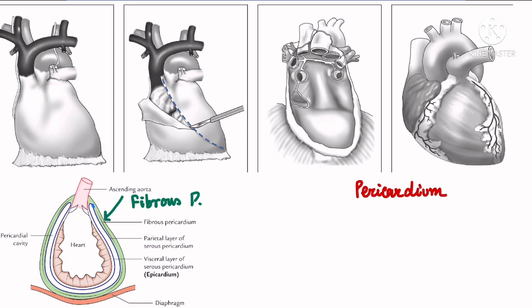The outer layer of the serous pericardium lines the inside of the fibrous pericardium. It is also known as the parietal layer of serous pericardium. The layer which lies most within is known as the visceral layer of serous pericardium.